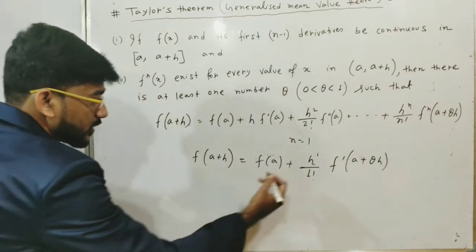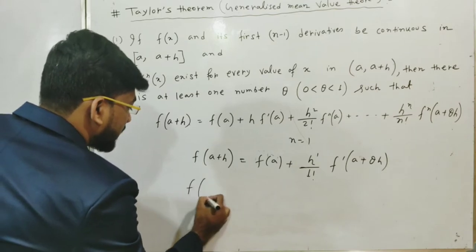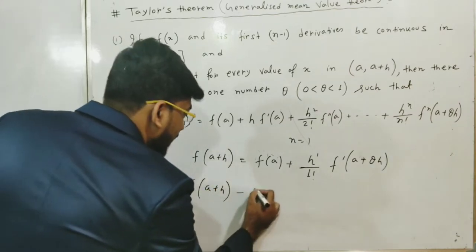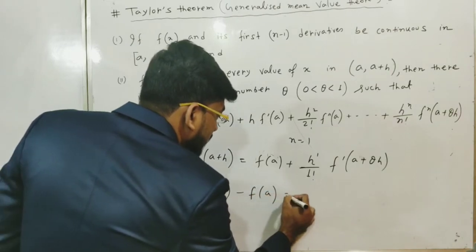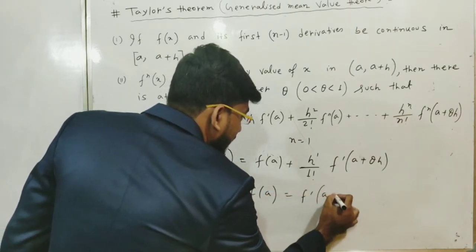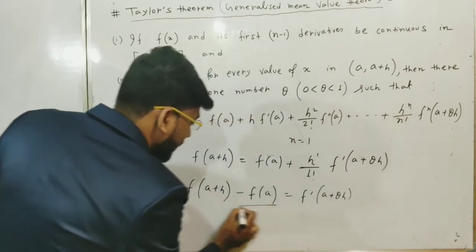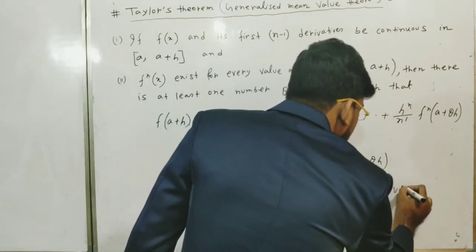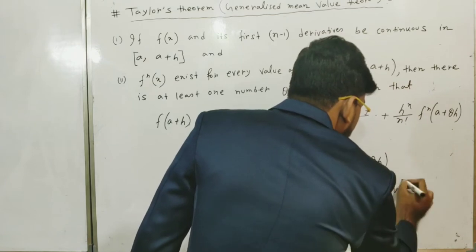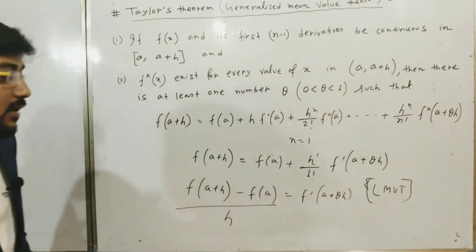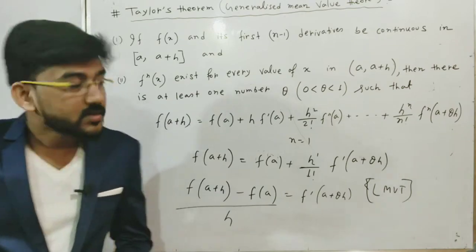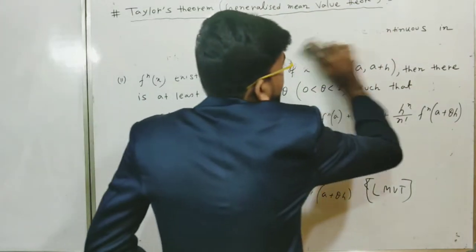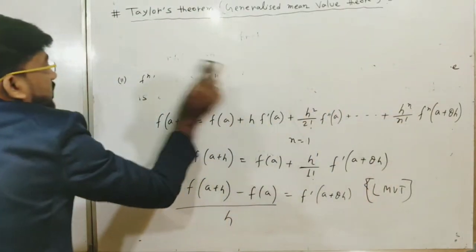If we rearrange this equation, we get f(a+h) − f(a) = h·f′(a+θh), which is nothing but Lagrange's mean value theorem. This is not the conventional form though — let me relate it to the conventional form so you can understand it.